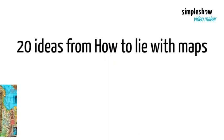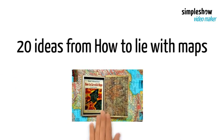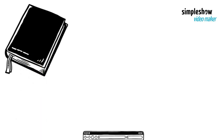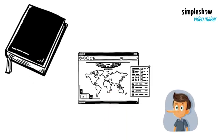20 things about how to lie with maps. Number 1. In this book, the author explains why all maps have to lie.